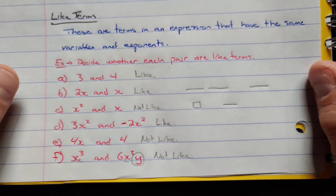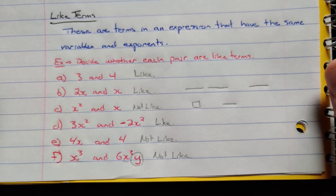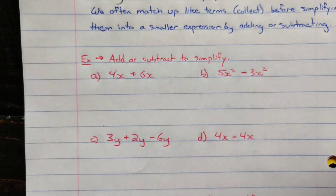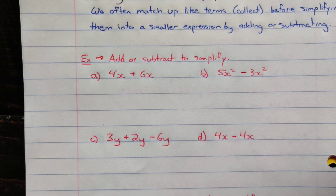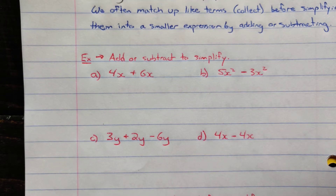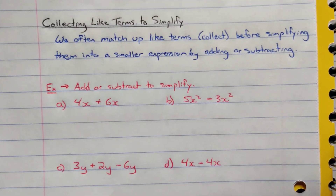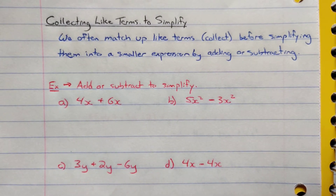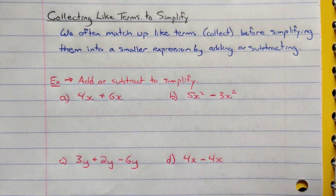Knowing what like terms are, we can simplify expressions by adding and subtracting them. To do that we collect like terms — match them up — and then simplify by adding and subtracting those terms together. Here are some examples starting with simply adding and subtracting.